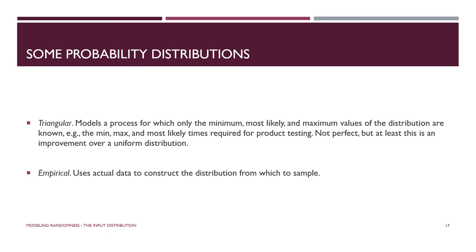Finally, there are some very simple probability distributions. The triangular distribution — which you've likely seen when using Arena/CloudSim to build simulation models, as it was one of the defaults — requires a minimum, a maximum, and a most likely value. The most likely value gets the highest relative frequency. It's a slight improvement over a uniform distribution. The empirical distribution uses the data as-is to construct the distribution from which to sample.